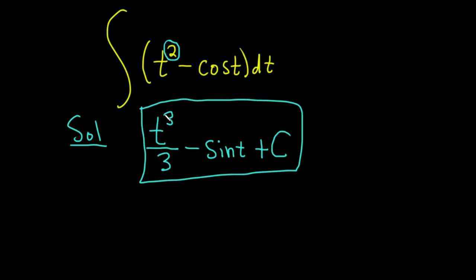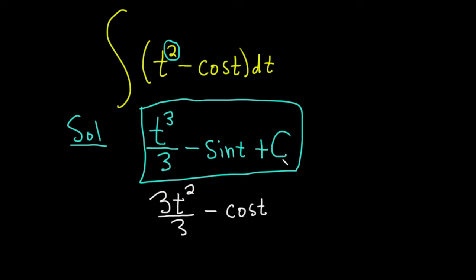To differentiate this, we'll use the power rule. You take the 3 and put it down in the front, so 3t, and you subtract 1 — 3 minus 1 is 2. That's all over 3. The derivative of sine is cosine, so this is minus cosine t. The derivative of C is 0, because it's a constant. These cancel, and so we get t squared minus cosine of t, which is exactly what we have in the integrand, so all is good.